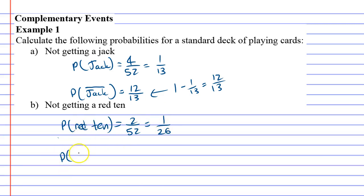So if I want to find the probability of not getting a red 10 (red 10 with a line above it, meaning its complement or not getting it), then what I would do is I would go 1 minus the above probability, which will come out to 25 over 26.